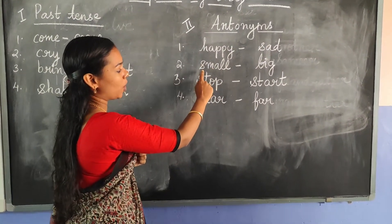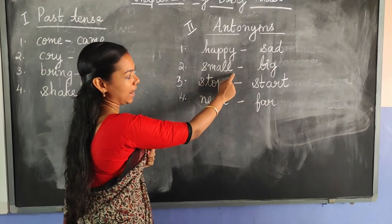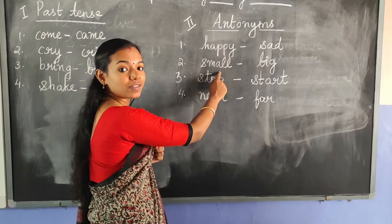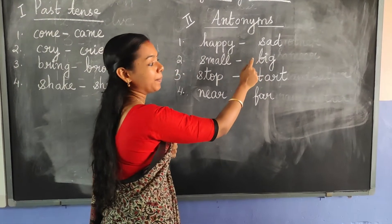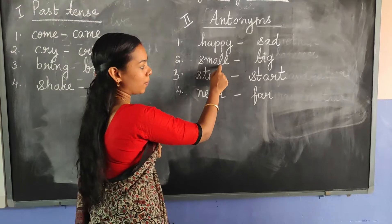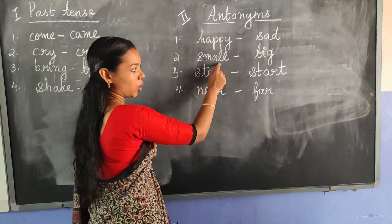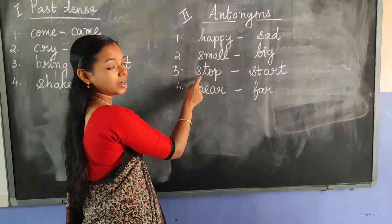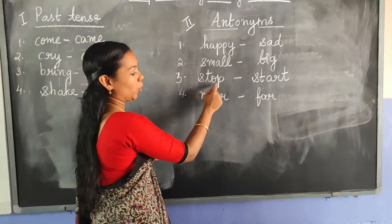Next one: small. S-M-A-L-L. The opposite of small is big. B-I-G. Small, big.